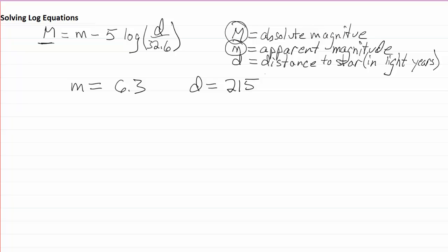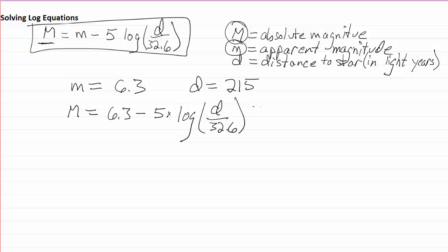We can calculate the absolute magnitude in that case. The absolute magnitude is going to equal this equation up at the top here. I just plug the numbers in. So I put in the 6.3 minus 5, this is multiplication here, times the log of the distance divided by 32.6. Oops, I forgot to put in the distance. So we'll just do that here.